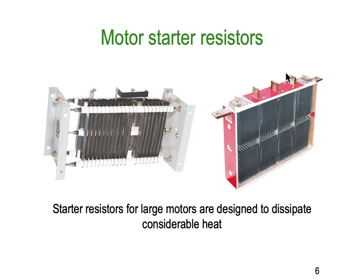Here are some pictures of those motor resistors. You can see they're quite large, with low resistance values but large wattages, because they have to dissipate a fair amount of energy. They're connected in stages with tappings — tapping one, tapping two, tapping three, tapping four — giving four groups of resistors. They often have to be mounted somewhere well ventilated so the heat produced at start can be dispersed quickly.